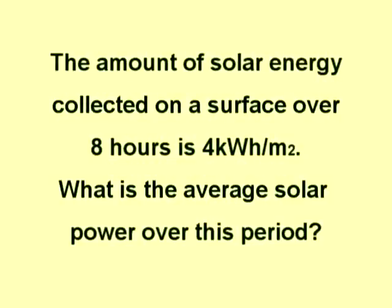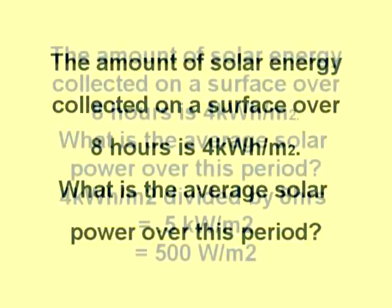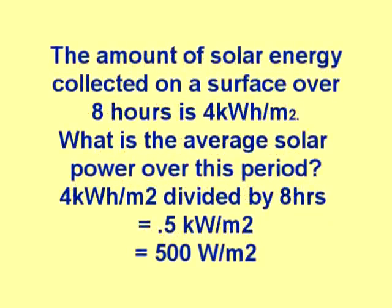The amount of solar energy collected on a surface over eight hours is 4 kilowatt hours per meter squared. What is the average solar power over this period? 4 kilowatt hours per meter squared divided by 8 hours equals 0.5 kilowatt hours per meter squared. To get the answer in watts, multiply 0.5 times 1000, since there are 1000 watts in a kilowatt — the answer is 500 watts per meter squared.